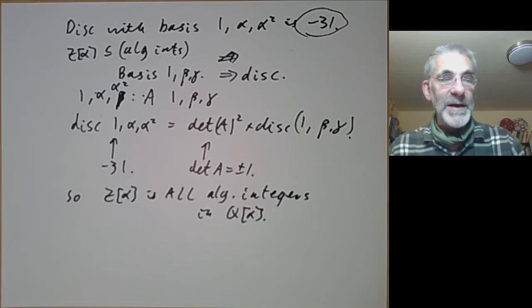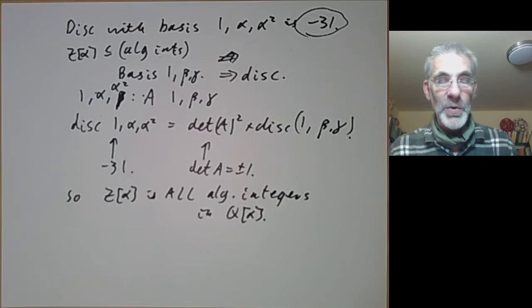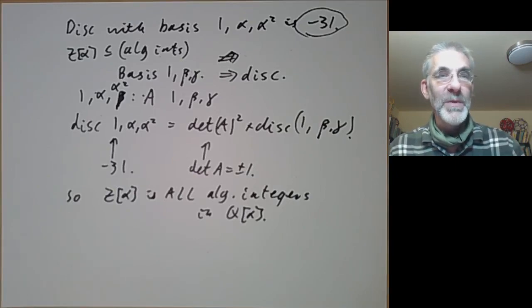The next lecture will be looking at a famous result called Hilbert's Theorem 90, and we'll explain where this rather unmemorable name comes from.